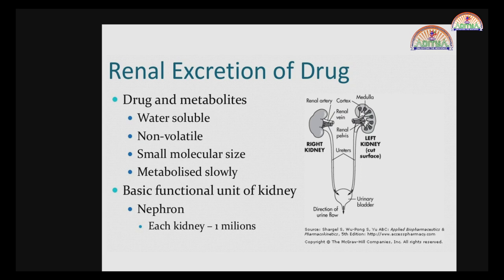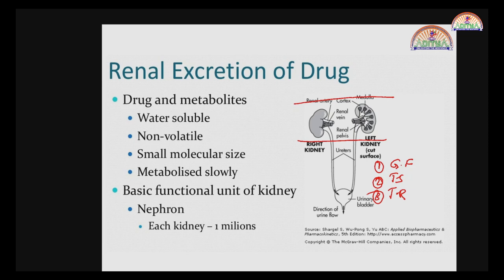These nephrons are the structural units of the kidney, where glomerular filtration, tubular secretion, and tubular reabsorption take place. By these three phases, the drug is eliminated from the body. Once all filtration is done, it comes into the collecting ducts, and all the collecting tubules open into the renal pelvis, which opens to the ureter. The urine is then collected in the urinary bladder and passed outside the body.